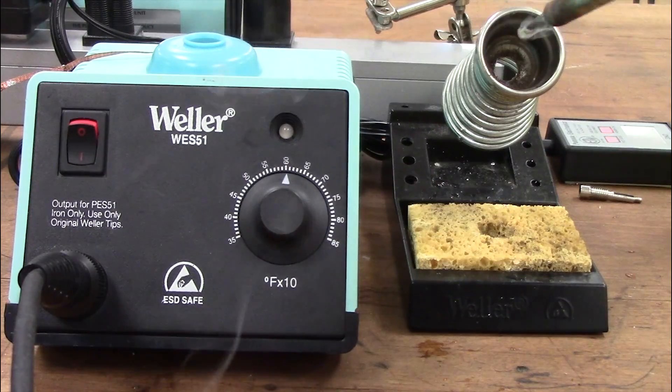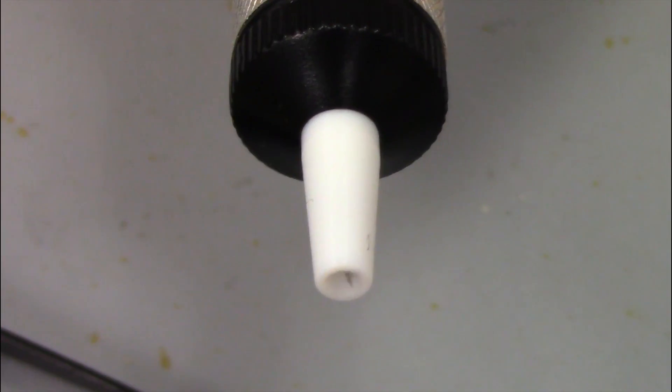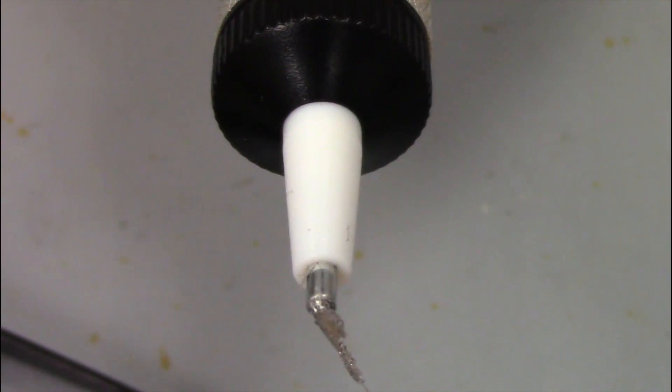Tend the soldering iron tip and return the iron to its stand. Completely depress the plunger to eject the solder from the pump.